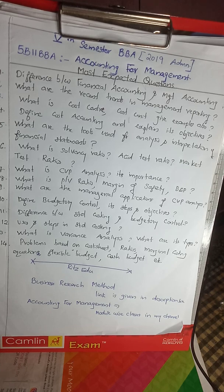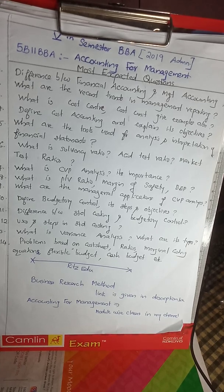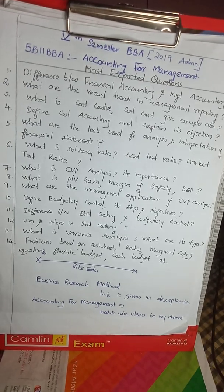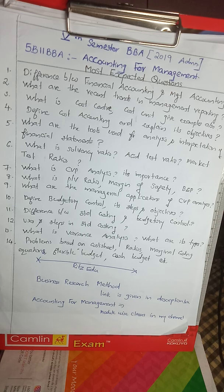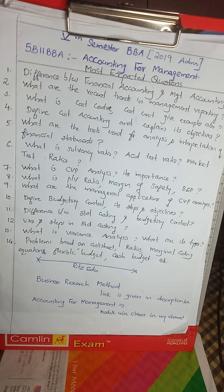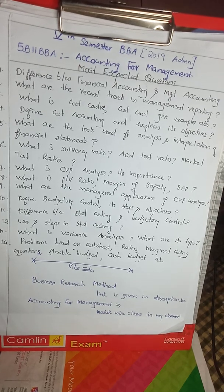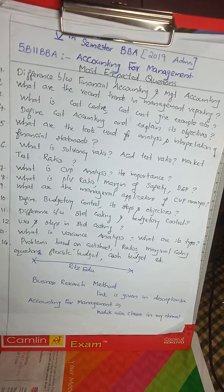What are the tools used for analysis and interpretation of financial statements? The tools include: common size financial statement, common size income statement, ratio analysis, and trend analysis. The ratios include solvency ratio, liquidity ratio, profitability ratio, marketability ratio, and asset risk ratio.